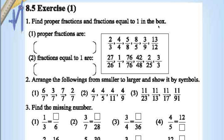Fractions and fractions equal to 1 in the box. In this box, 2 by 3 is a proper fraction. Why? Because the numerator is less than the denominator. So this is a proper fraction.